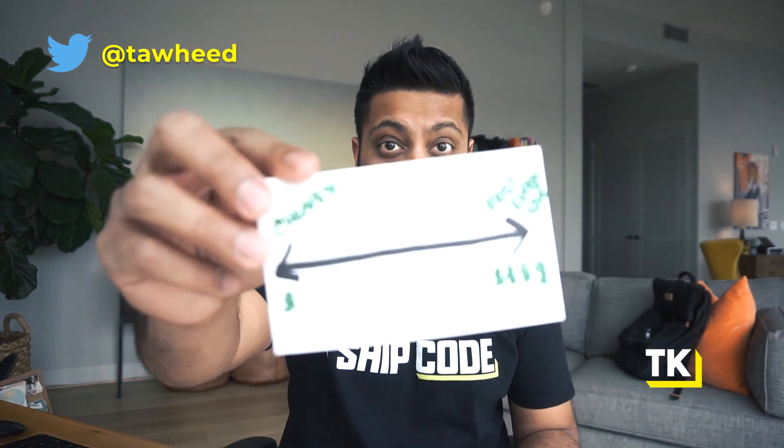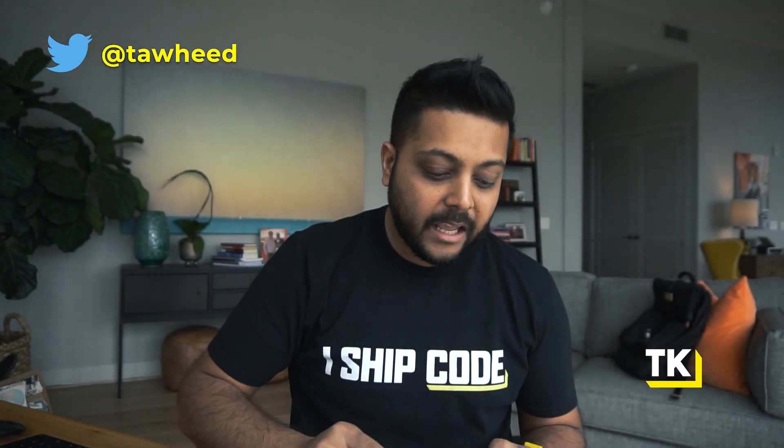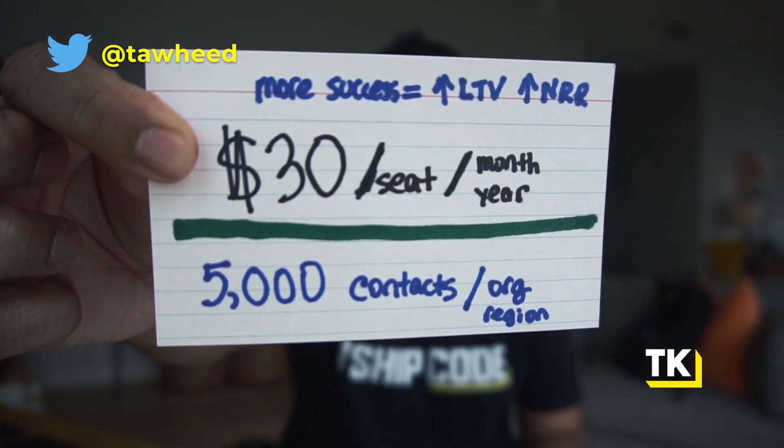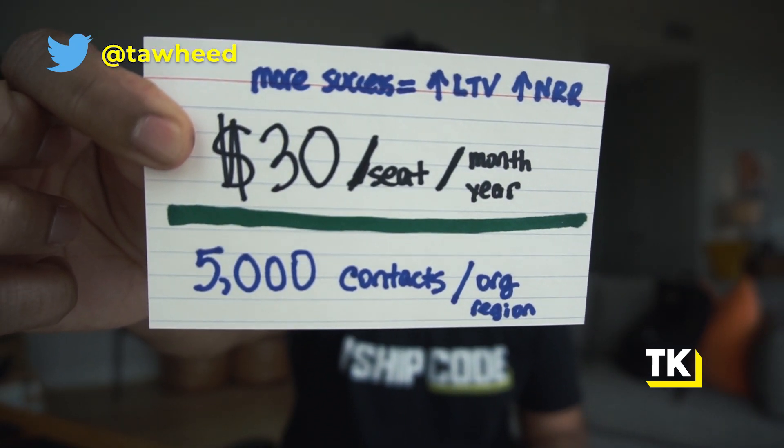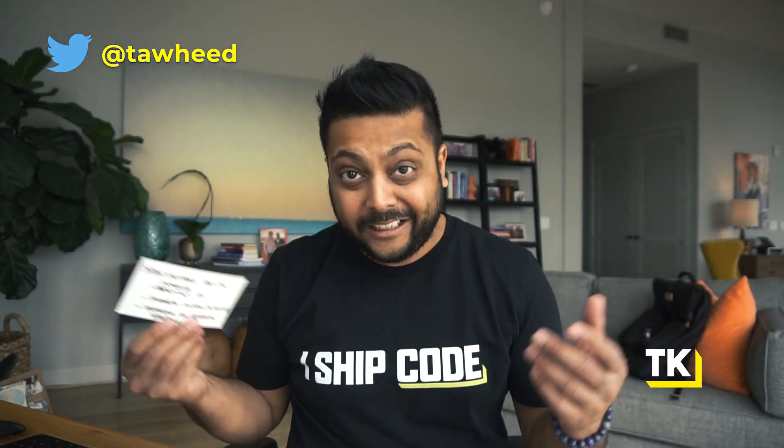So to recap the first three principles: number one, choose your exact pricing strategy — are you going for a low cost or a premium strategy? Number two, figure out what the ceiling is and make sure your pricing model increases cost as the customer gets more success over time. Number three, actually offer add-ons — the biggest being training, onboarding, setup, or analytics. If you're starting to see some things you can tweak in your pricing strategy, put a yes in the comments below, tell me what your current pricing strategy is, and link me to your SaaS product.